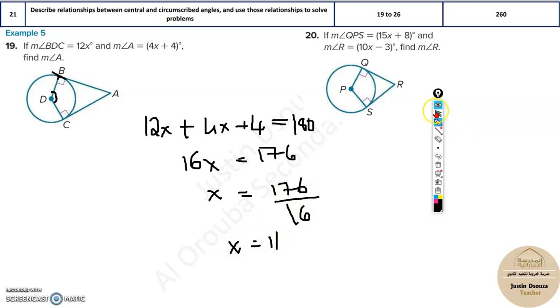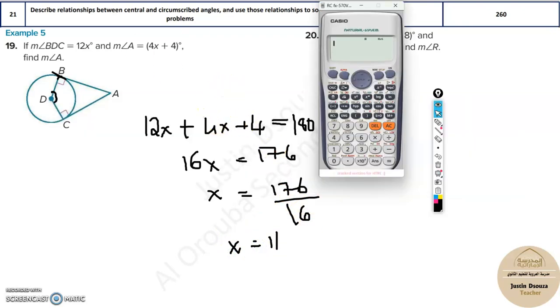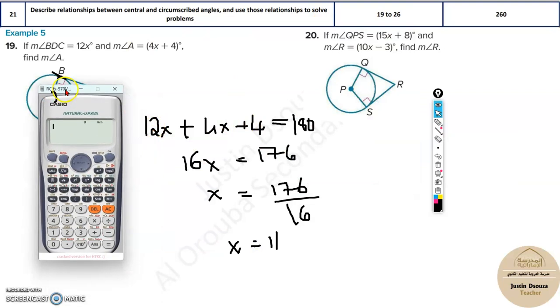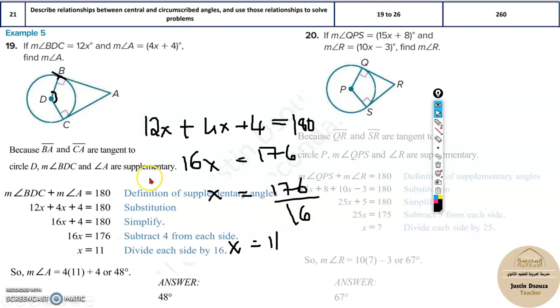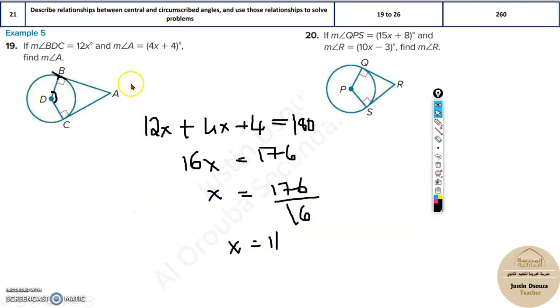So this is how we can solve. But you can double check your answer from any of the steps. From even the first step, if you want, you can double check it. Just type it in the calculator. 12x plus 4x plus 4 equals 180. And just press shift and solve. You're going to get the answer, it's 11. You can double check the answer. But I'm sorry, it's not over here. I have found only x.